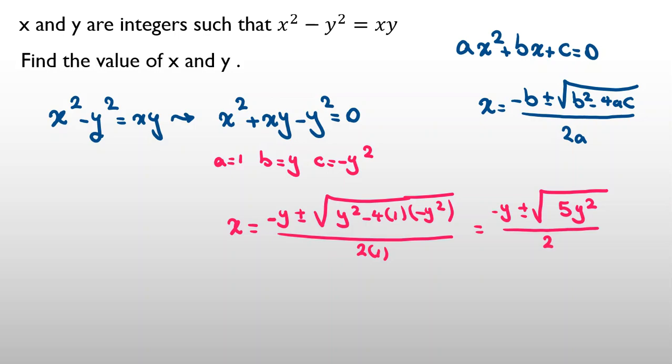Now, let's multiply both sides by 2. It will be 2x equals negative y plus or minus square root of 5y squared. If we take negative y to the right hand side, it will be 2x plus y equals root 5y squared. We know it is integer, so left hand side is integer, right hand side should be integer.